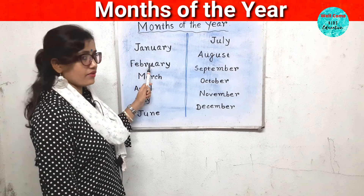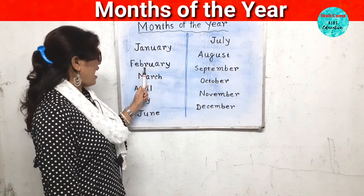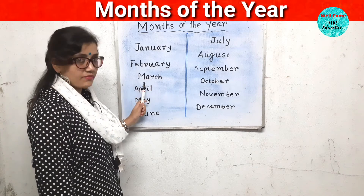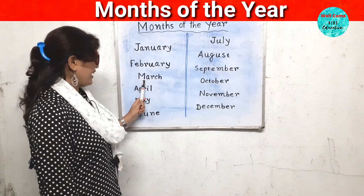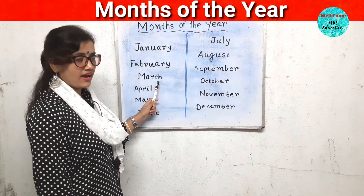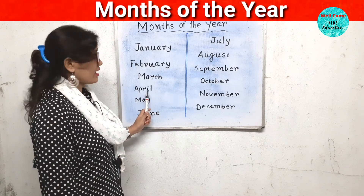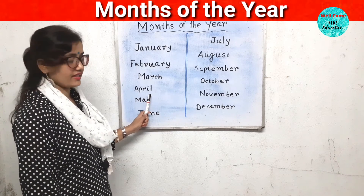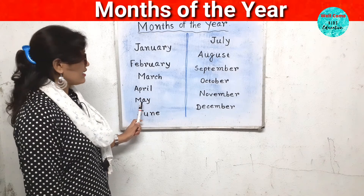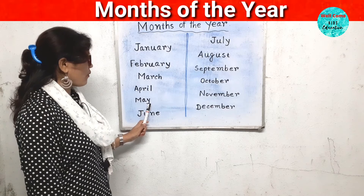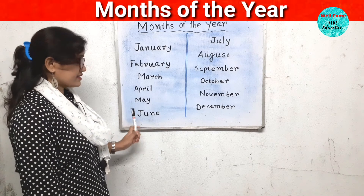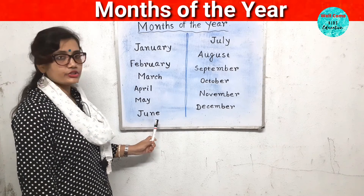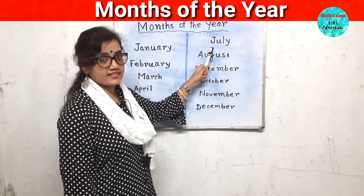The second month is February. F-E-B-R-U-A-R-Y. February. The third month is March. M-A-R-C-H. March. The fourth month is April. A-P-R-I-L. April. The fifth month is May. M-A-Y. May. The sixth month is June. J-U-N-E. June.